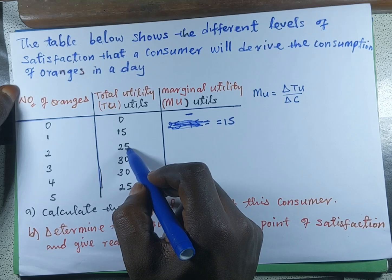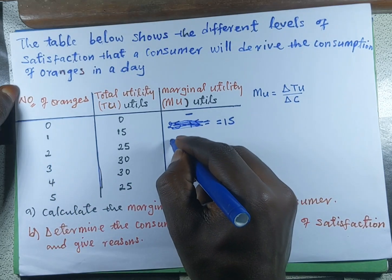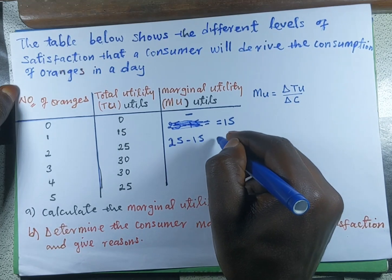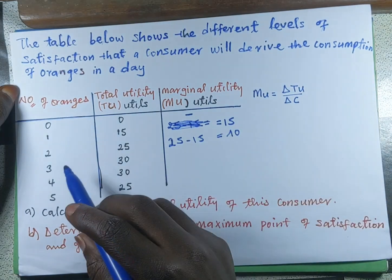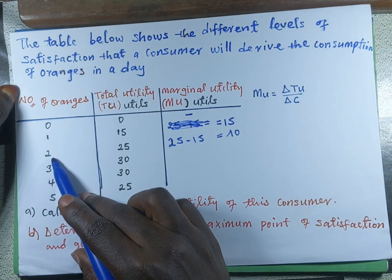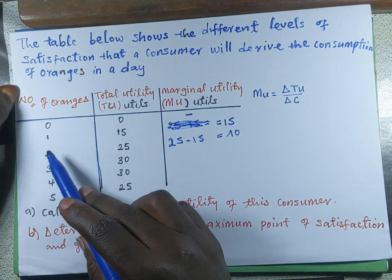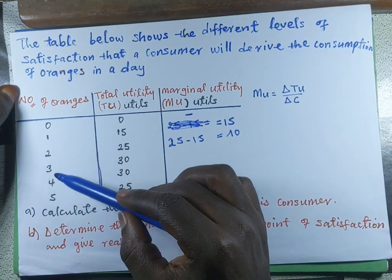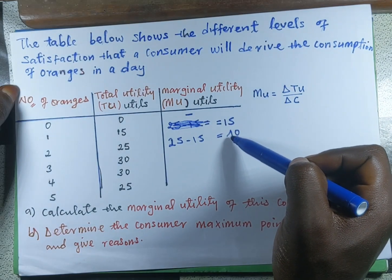We are going to look for the extra utility — that is, the extra satisfaction derived from consuming the second orange. So we are going to have 25 minus 15, which is equal to 10. That is our marginal utility after consuming the second orange. We do not need to divide by the number of units consumed since it increases by one, so dividing by one gives the same answer.